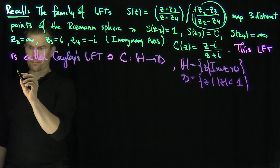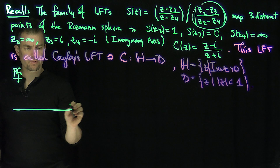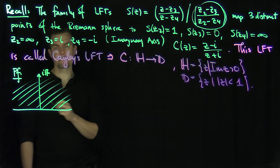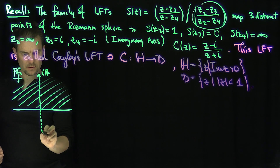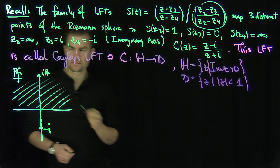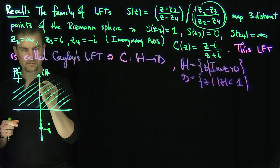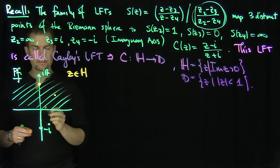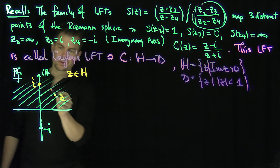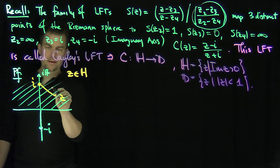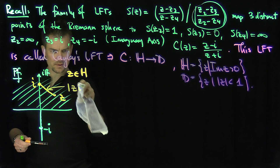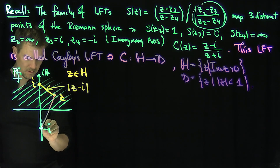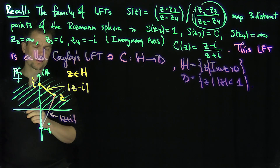We need to show that if Z is in H, and let's do it two ways. There's a geometric way of doing this. If we have the upper half space, negative i is below and positive i is above. If Z is in the upper half space, that means Z is somewhere above the real axis. The length from Z to i is the modulus of Z minus i, and the length from Z to negative i is the modulus of Z plus i.